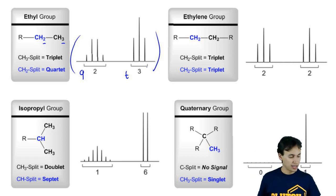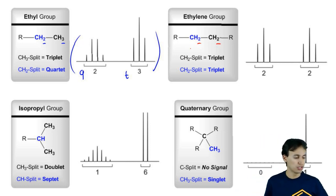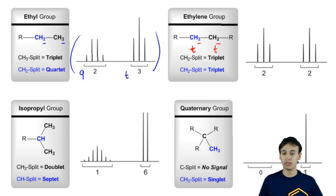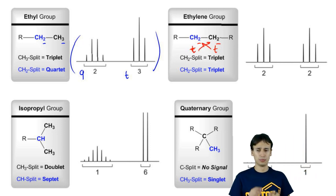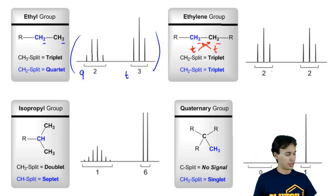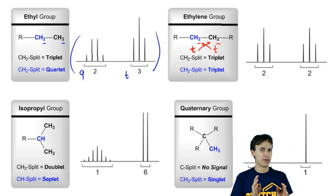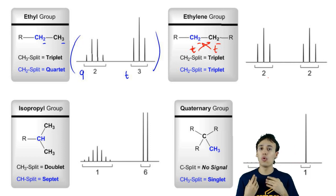In the same manner, an ethylene group would just be 2 next to a 2. That means that one would split into a triplet and the other one would also split into a triplet — they split each other into the same thing. If you see a triplet-triplet, that might tell you that you have an ethylene group present. It's not always the case, but it's very likely.